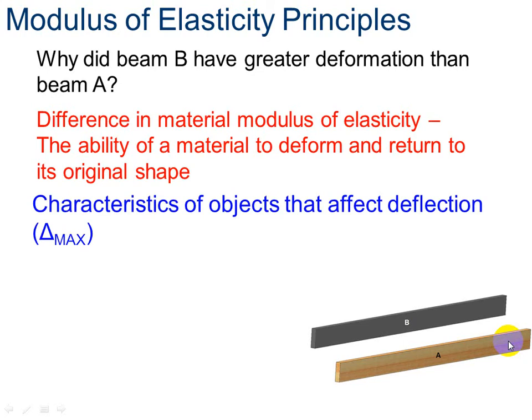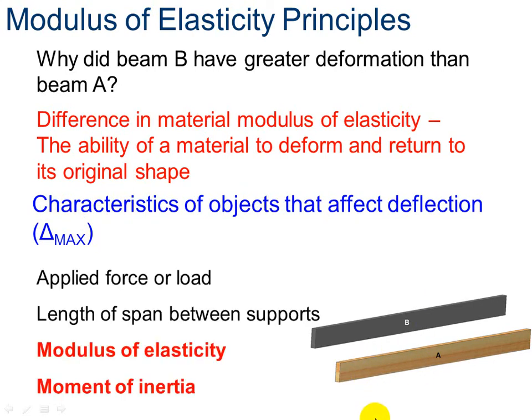Characteristics of objects that affect deflection. And deflection is really the change. This triangle right here means change in position. So the difference is how much this will move and come back to its original position. We're going to apply a force or a load on each one. And so the amount of force or load that you put on it matters. And then also the length of the span between the supports. Do we support it here and here, or do we support it at the end? So how long this beam is makes a difference. And then, of course, modulus of elasticity and moment of inertia play a role.